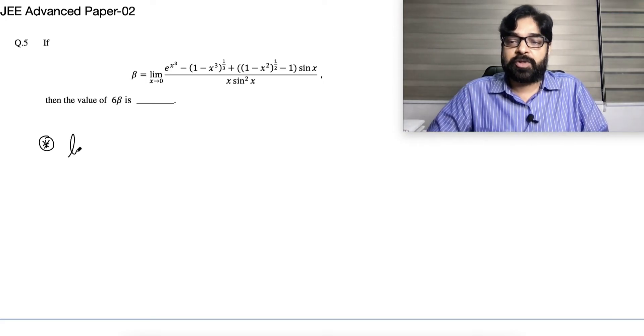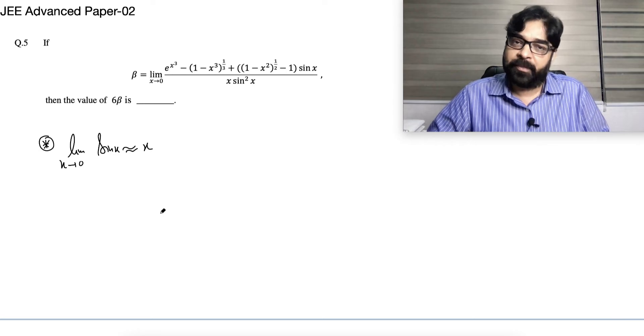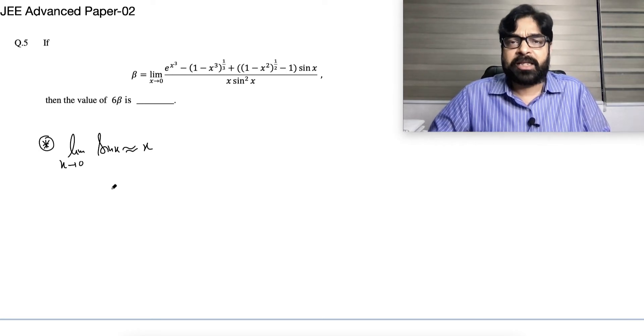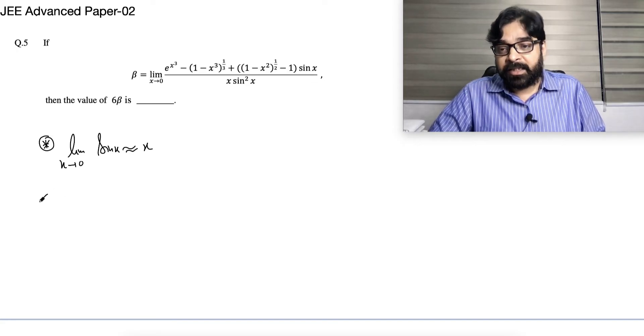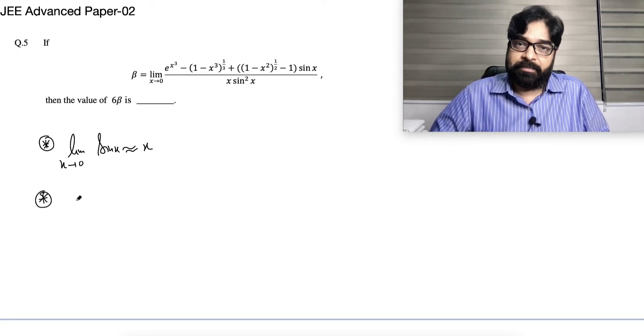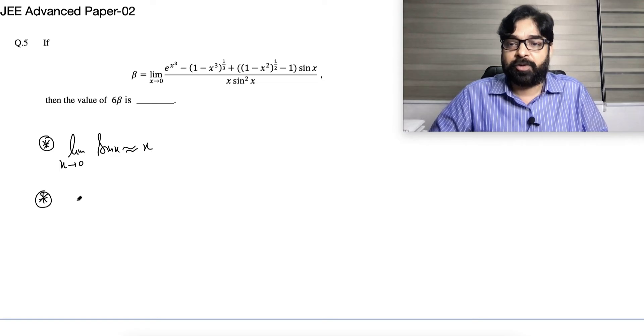What does mean by approximation? Whenever x tends to 0, limit x tends to 0, sin x can be approximated as x. All of you know sin x by x is equal to 1, the same logic. Second thing, you should know the expansion of the bracket, binomial theorem, you should know it.